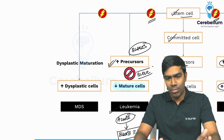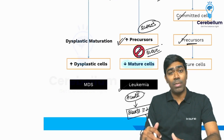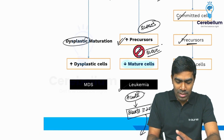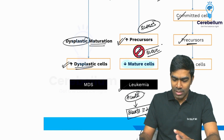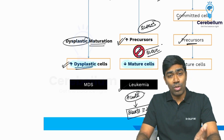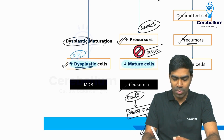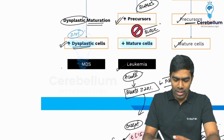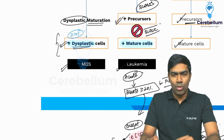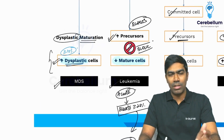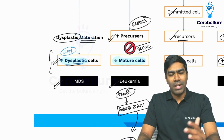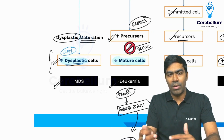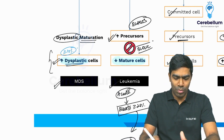In case there is a mutation or cytogenetic abnormality in the stem cell that results in abnormal and dysplastic maturation, you are going to see more dysplastic cells. By definition, the proportion of dysplastic cells should be more than 10% in the peripheral blood or bone marrow — that is called myelodysplastic syndrome (MDS). You can see a little bit of blasts in MDS also, because with abnormal maturation there is a slight block in differentiation.